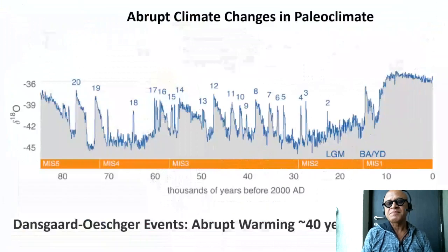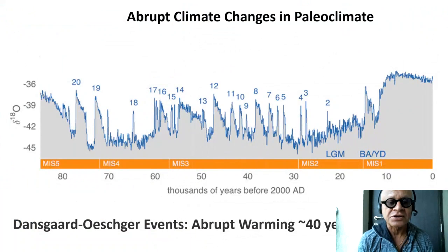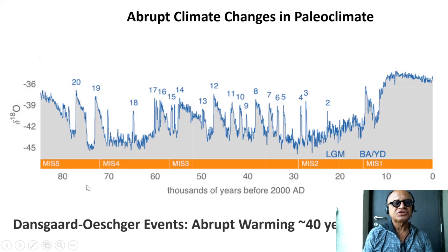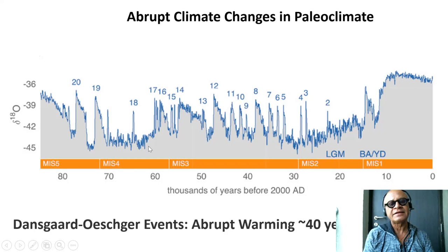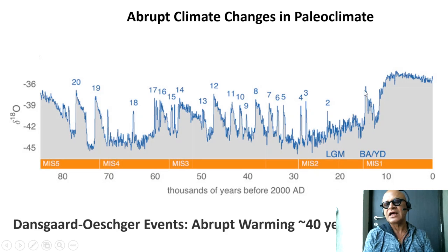Let's revisit these abrupt climate events in context. This is zooming into the last 80,000 years — the last 100,000-year cycle from the glacial maximum to the present deglaciation. Here you are in the glacial period and you can see a lot of these hiccups or abrupt climate changes, including the Bølling-Allerød, which was the last warm episode before the Younger Dryas crashed and cooled again, and then we came out of it here.